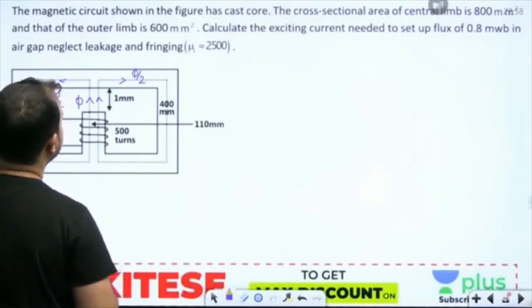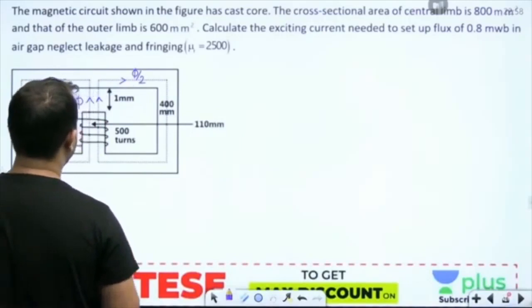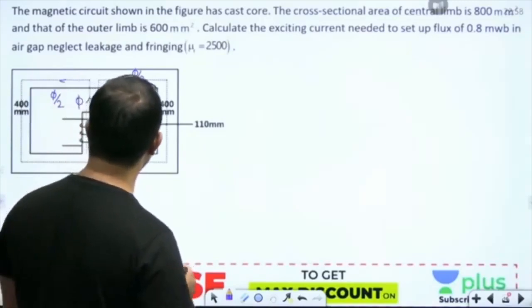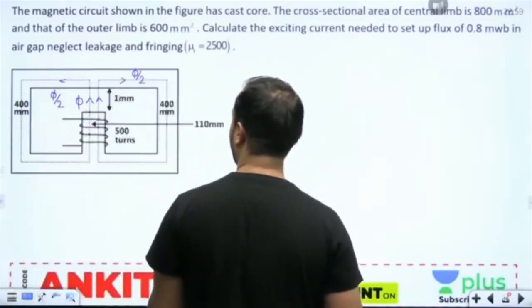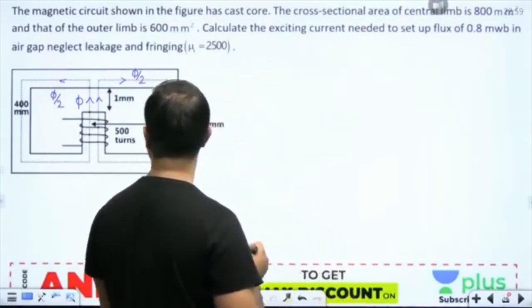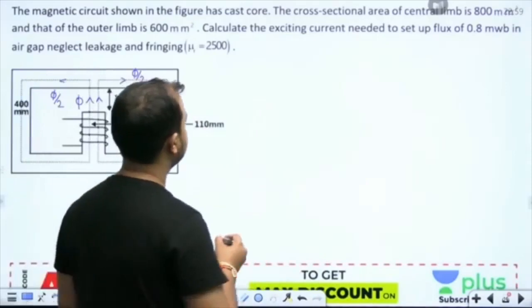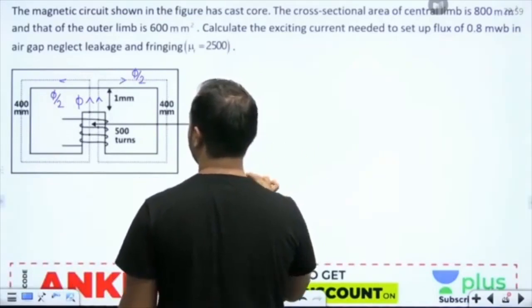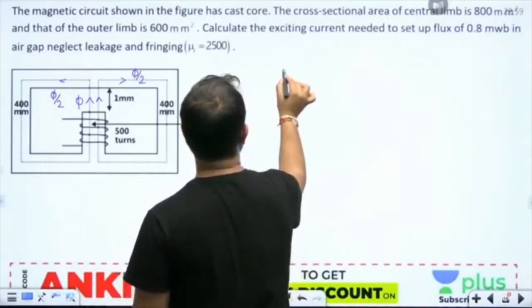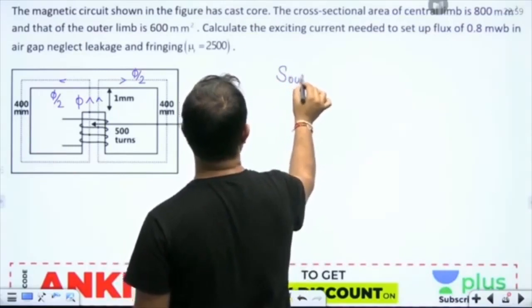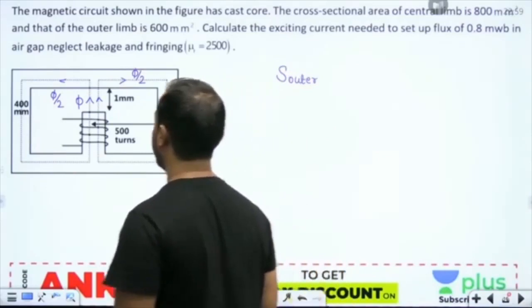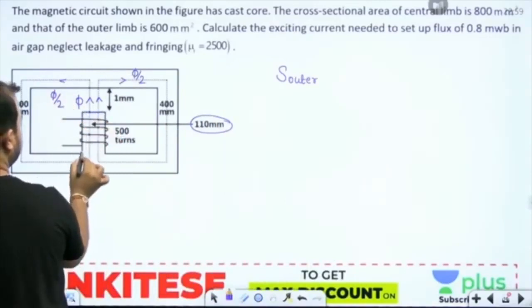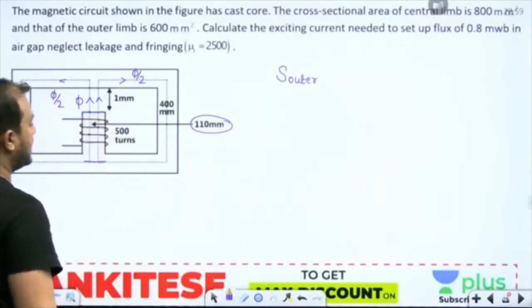Now my friend, what it is saying is that this is 400 mm and the air gap is 1 mm. Basically, the area of the central limb is 800 mm square and the outer limb is 600 mm square. So first let us find out the reluctance of outer limb. And this length is also given as 110 mm.